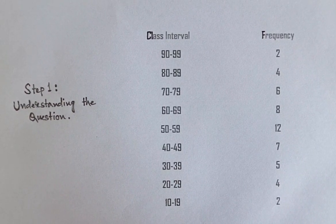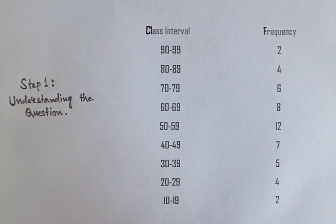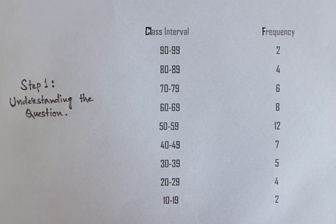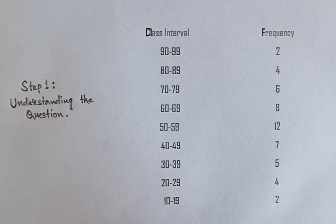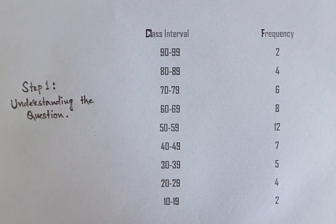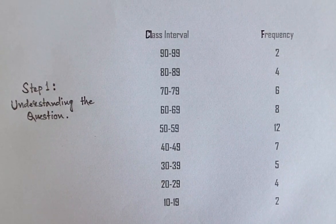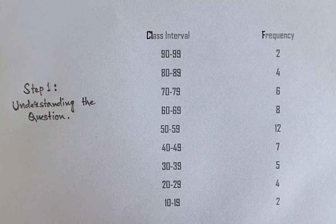The frequencies are 2, 4, 6, 8, 12, 7, 5, 4, and 2. This means we need to plot the frequencies as bars for each interval.